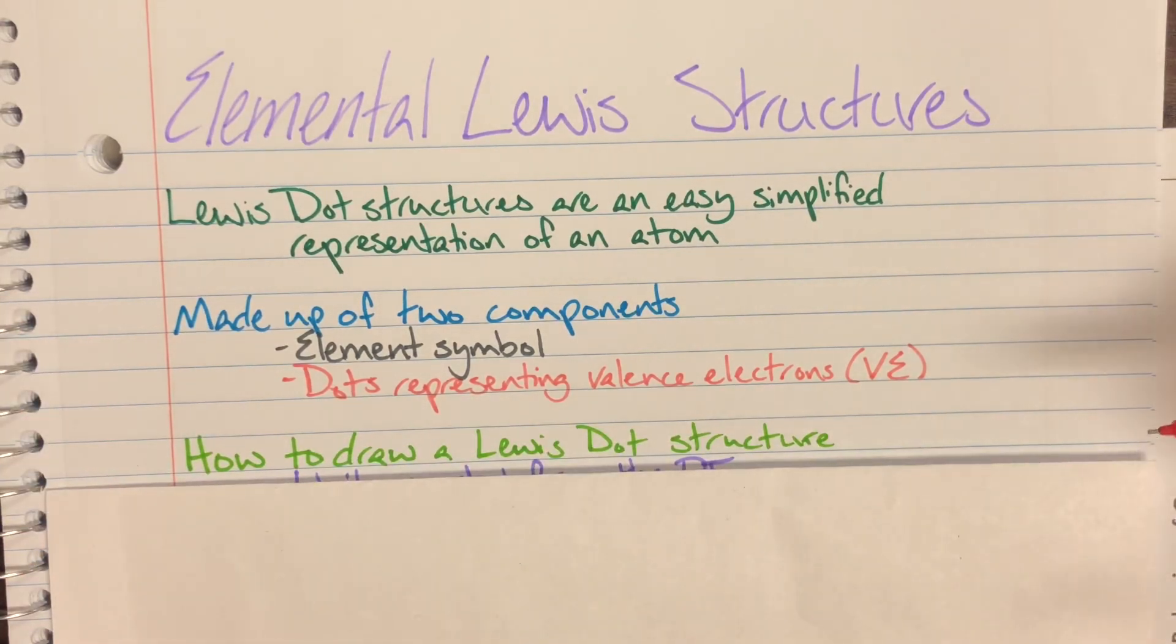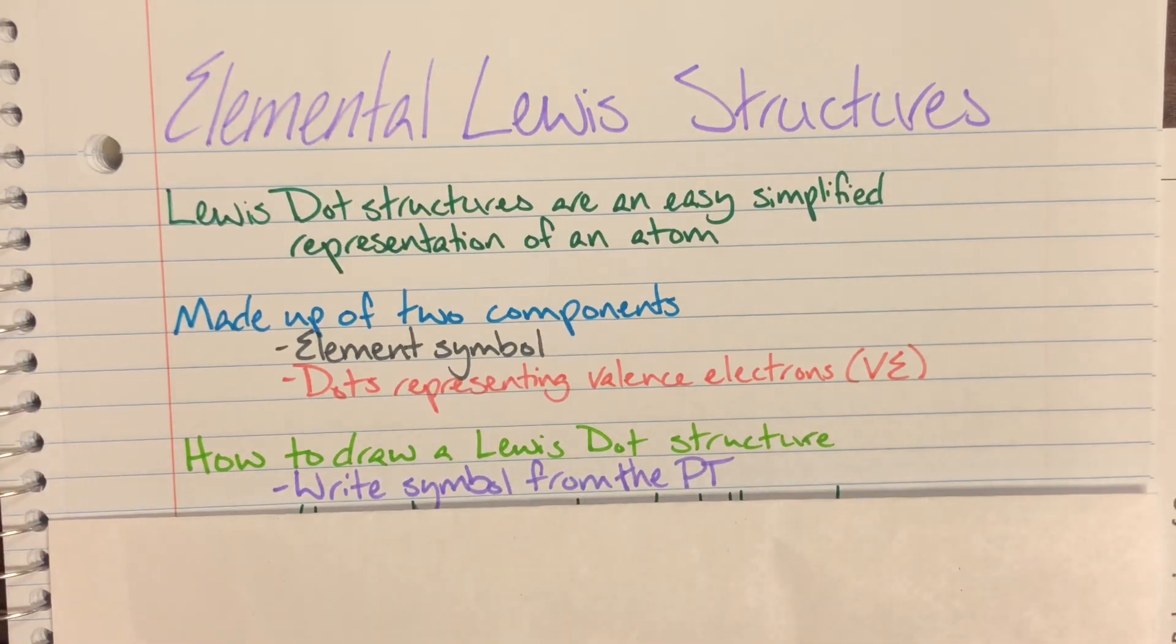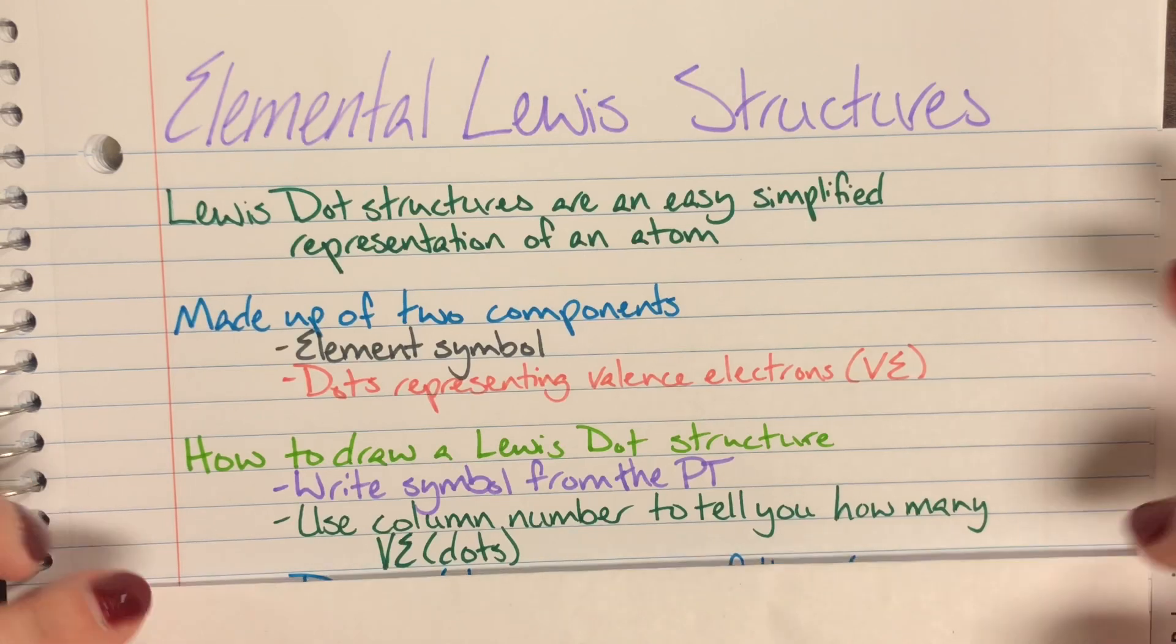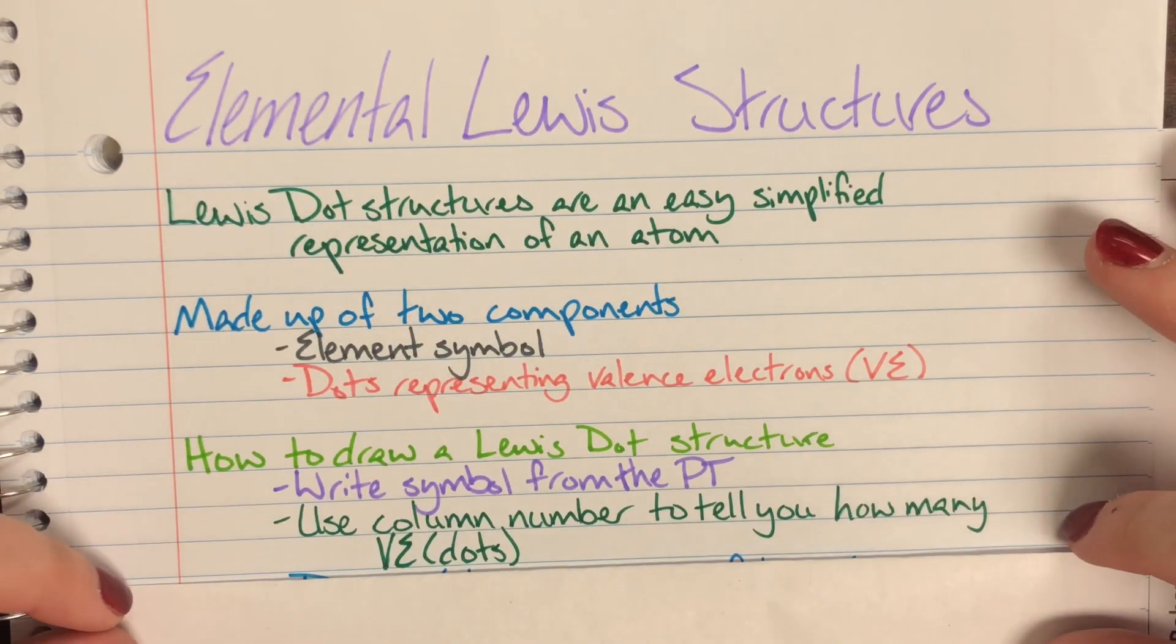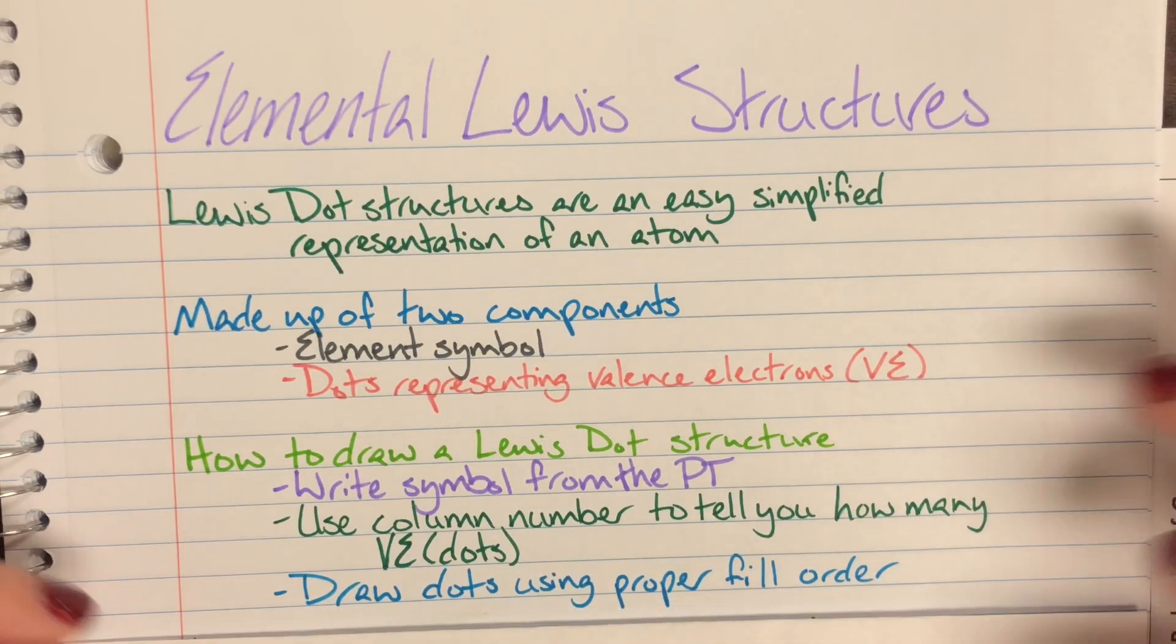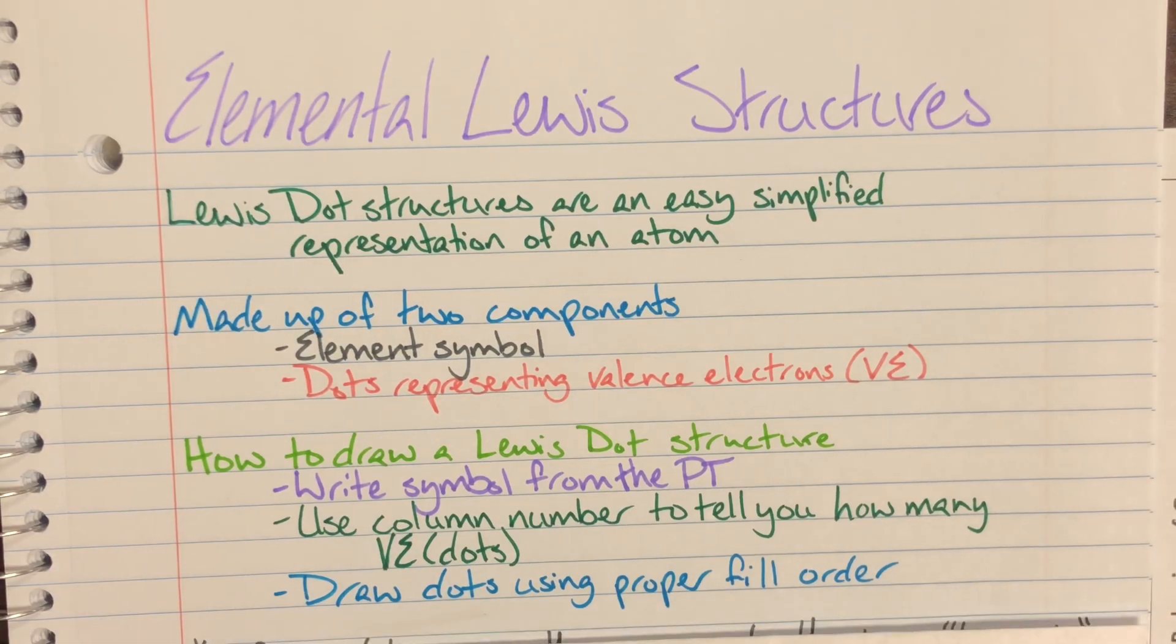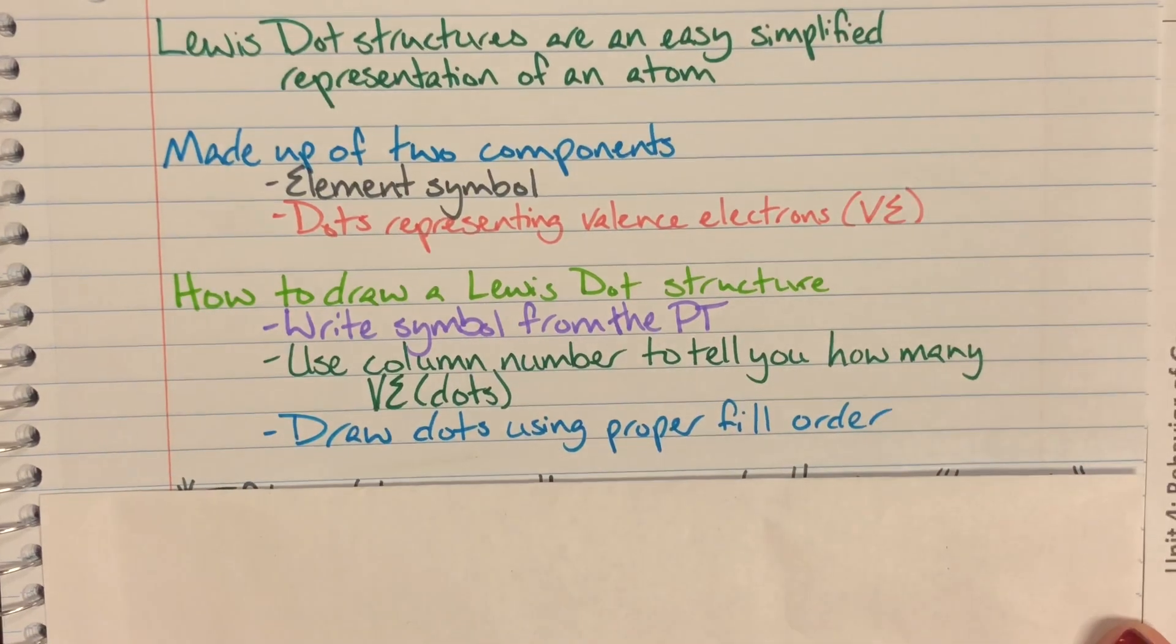How we're going to draw the Lewis dot structure is really easy as well. We're going to just write the symbol directly from the periodic table and then we'll use the column number with the A on top to tell us how many valence electrons or dots that we have to actually draw around the symbol. We do have to draw the dots in a proper fill order but the fill order is actually pretty intuitive and not that big of a deal to learn.